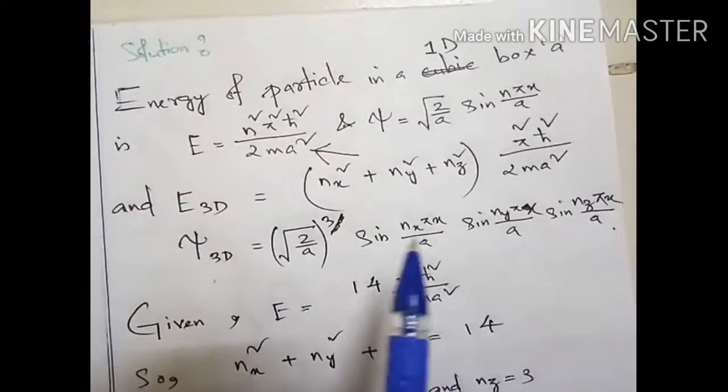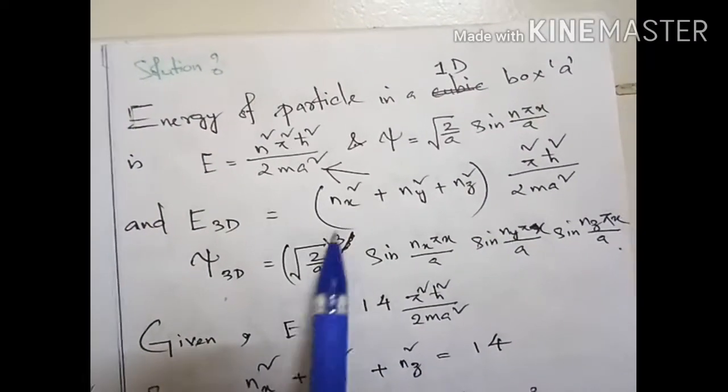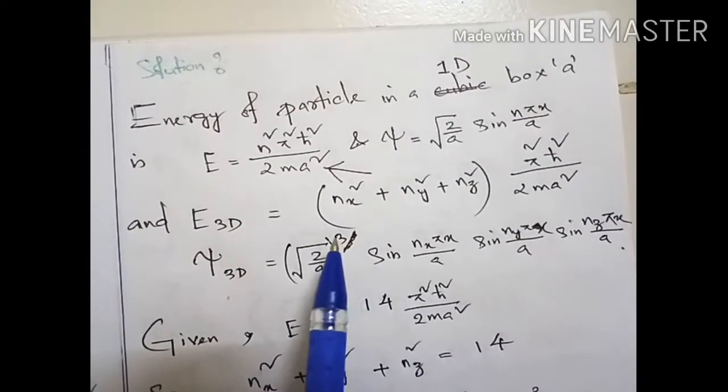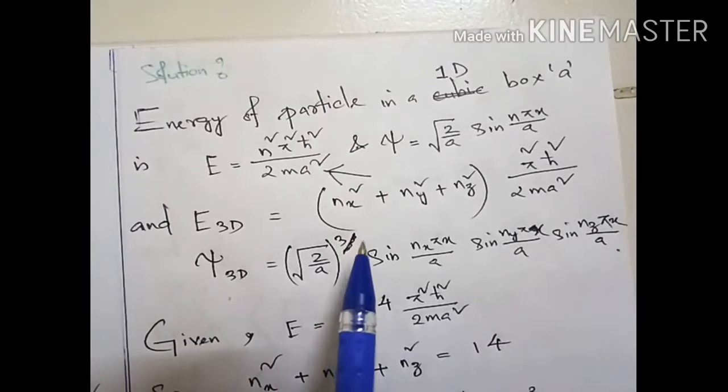The wave function will be the product of the one dimensional functions. It is √(2/a)³ because the wave function is along x direction, y direction, as well as z direction.